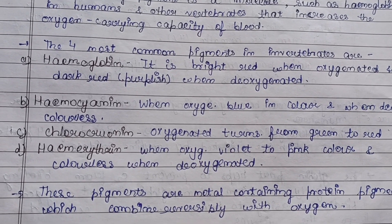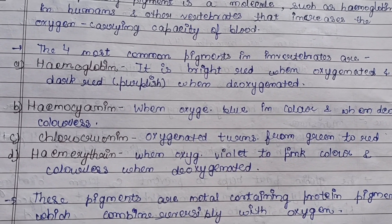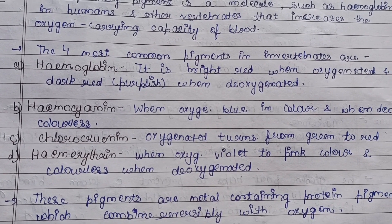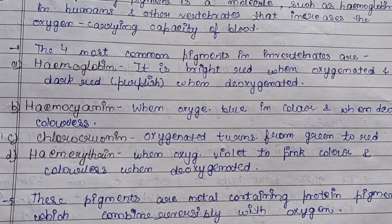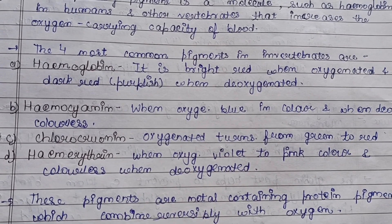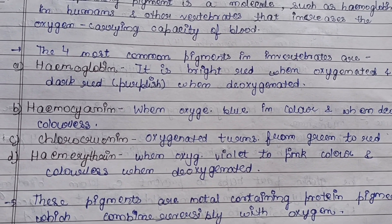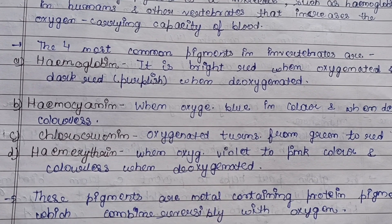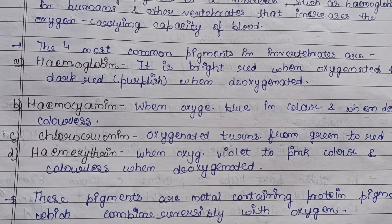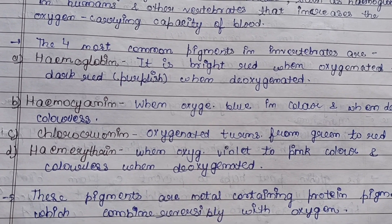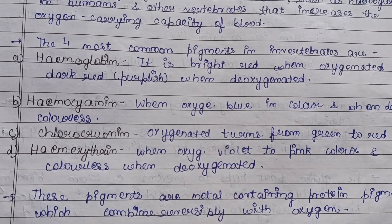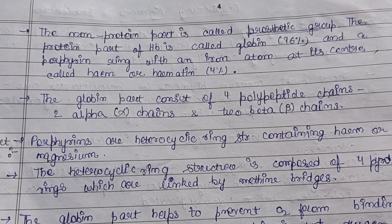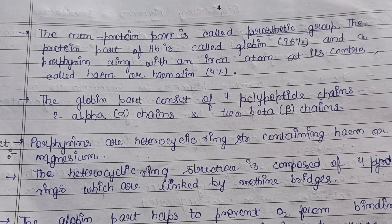The metal present in hemoglobin is iron, which combines reversibly with oxygen — meaning it can bind and release oxygen in various forms. This reversible binding is a key property of respiratory pigments.